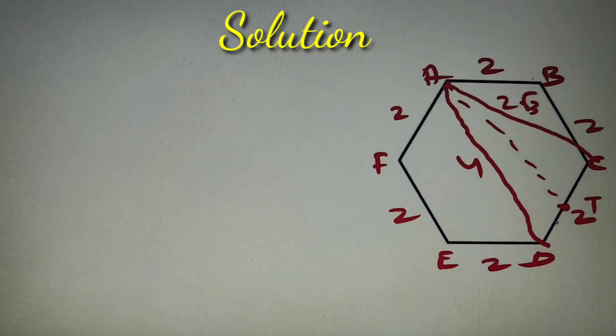Now if you look carefully, AT is basically acting as the median in the triangle ACD to the side CD from A. So we can apply the property of Apollonius theorem to find the length of the median AT as asked in our given question.